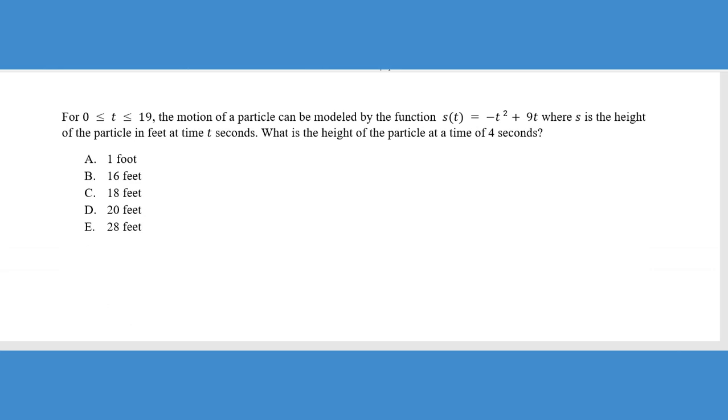Let's move on to the last problem in this practice set. For 0 ≤ t ≤ 19, the motion of a particle can be modeled by the function s(t) = -t² + 9t, where s is the height and t equals time in seconds. What is the height of the particle when t equals four seconds? When t equals four seconds, what that basically means is when t equals to four, we want to replace all the t values with a four. So this is a substitution problem or a fancier form of the evaluation problem that we did in the second problem earlier in this video. So I'm going to replace t with the four. And remember I said it's a good idea to use parentheses anytime you replace these.